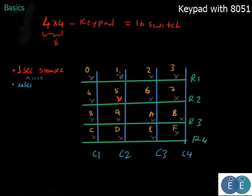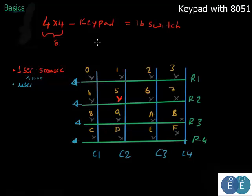We can use this fast speed of the microcontroller to save microcontroller pins. Instead of connecting 16 individual switches using 16 pins, we use a scan algorithm. To detect a key press, we make either the rows or columns as input and the other as output. So we make all the rows as input and all the columns as output, assuming these are connected to a microcontroller.